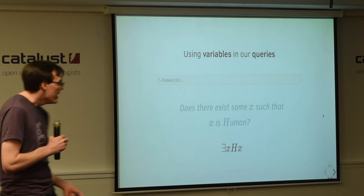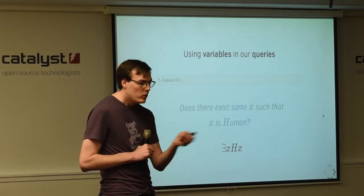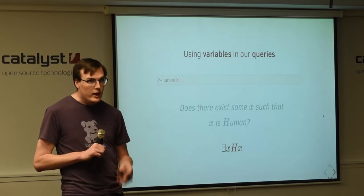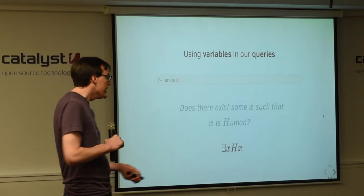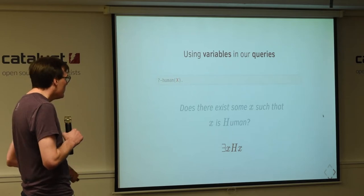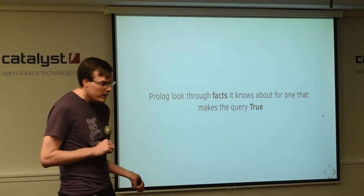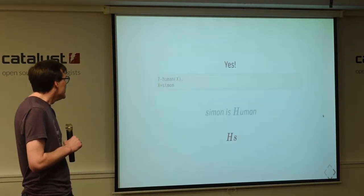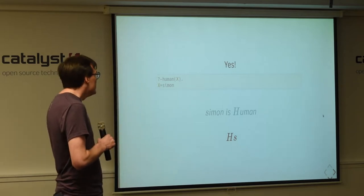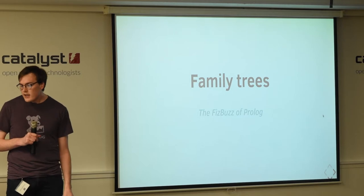But we can also use variables and variables should be understood not in the imperative programming sense where we assign a value to a variable. x equals three, name equals Simon. They should be understood in the algebraic sense like placeholders, where we want to solve for x. So, if we write a query and replace my name with a placeholder x, what we're doing is we're asking prologue, does there exist some x that x is human? And prologue looks through the facts that we've told it and it says, yes, I know that Simon is a human. And so, it will return x equals Simon. So, it's a very simple query with one variable.